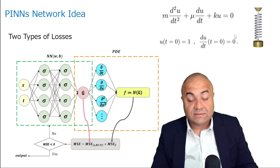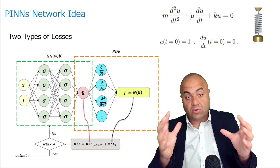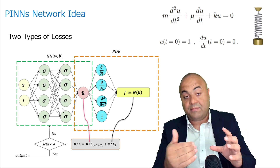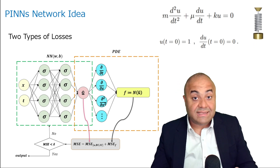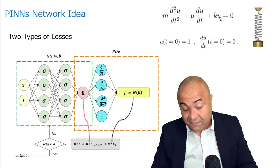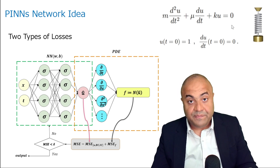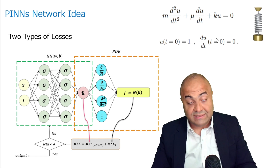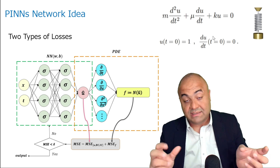The network also has to comply with the governing equation at domain points — for example at time equals 0.5, 75 seconds, and so on. The value of u and du/dt all has to equal zero. If it doesn't give us zero, we have a non-zero loss and the optimizer has to change the weights and biases to comply with this rule.